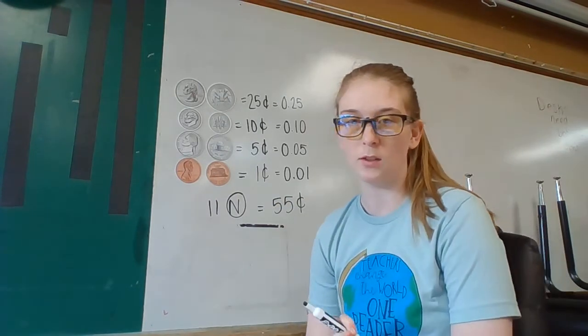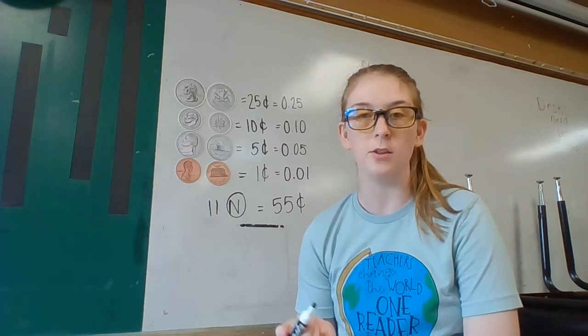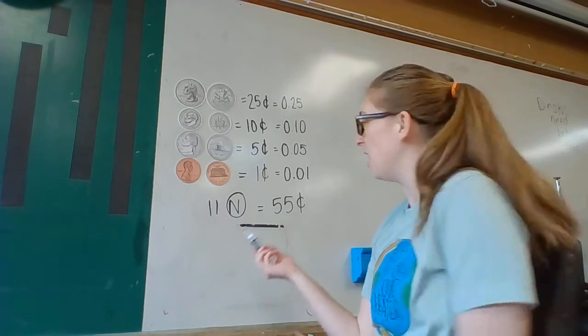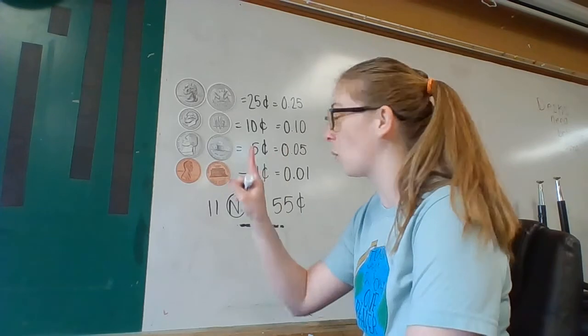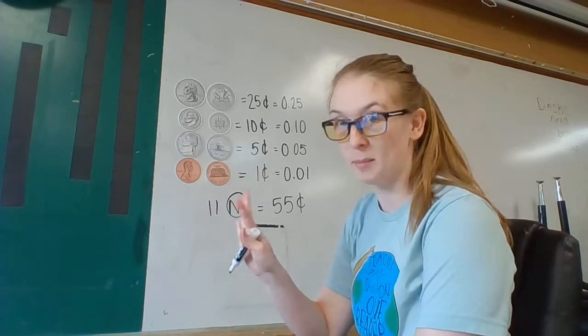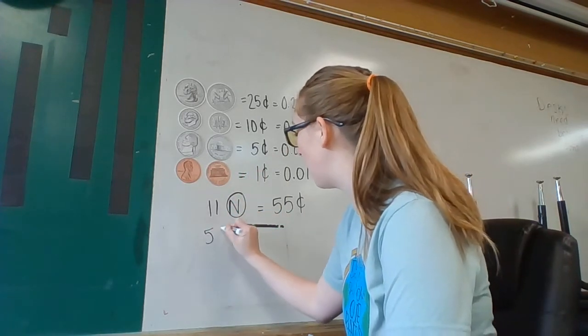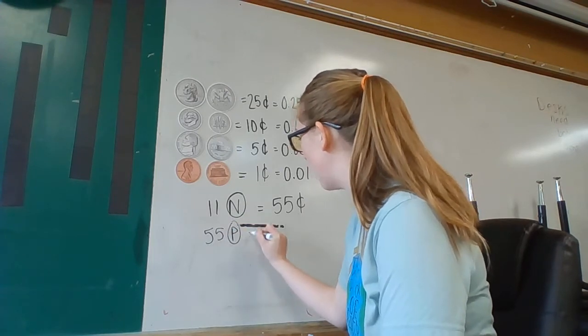What's another thing that I could do? I could do 55 pennies because a penny is worth one cent, so if I add one, two, three, all the way up to 55, I would have 55 pennies. That equals 55.